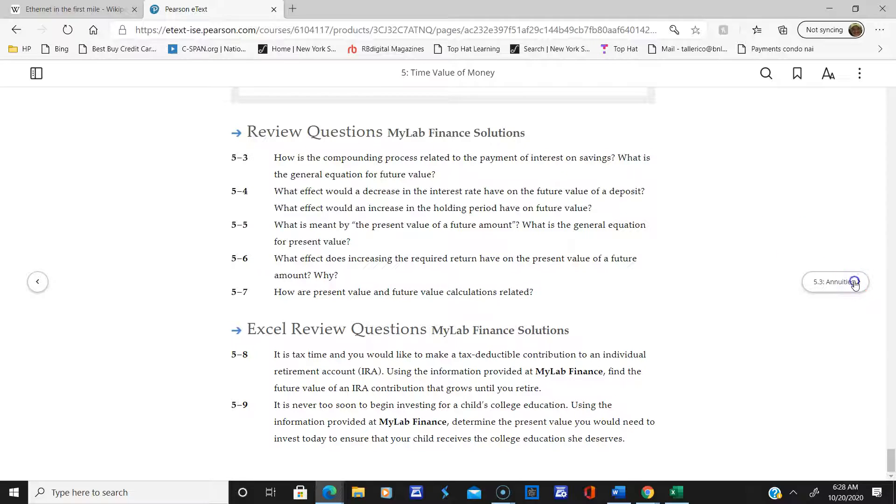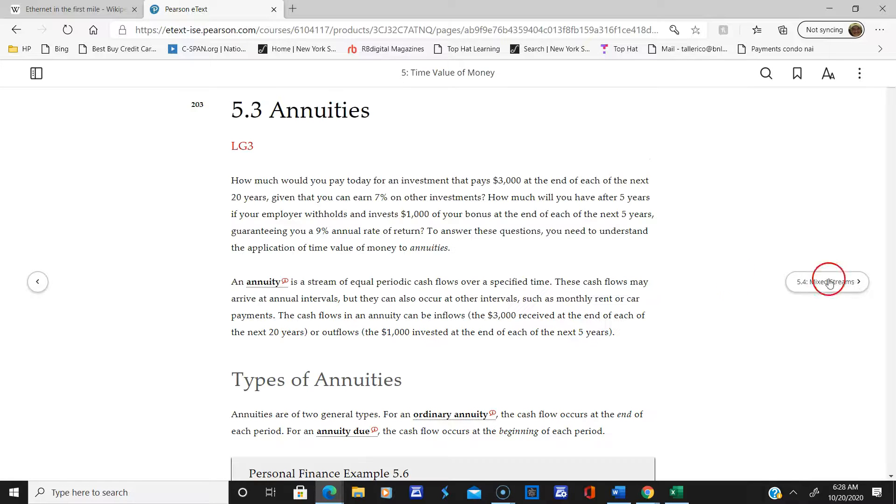Now we're going to talk about annuities. Annuity is an important word - an annuity is not a single amount of money but a continuous stream of money that you put in. For instance, if you have a 401k, you take money out of your paycheck every two weeks, month, or week - the same amount of money.